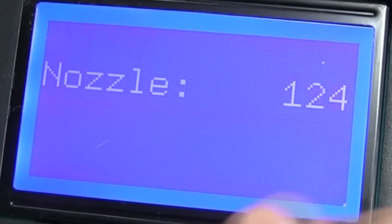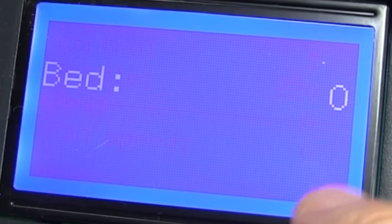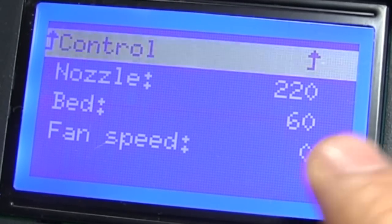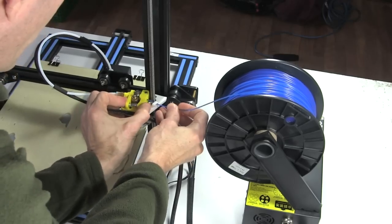I then use the controls to tell it I want an extruder nozzle temperature of 220 degrees Celsius and a bed temperature of 60 degrees Celsius. I then go back to the info screen to wait for the temperatures to be reached. Next I load the filament.